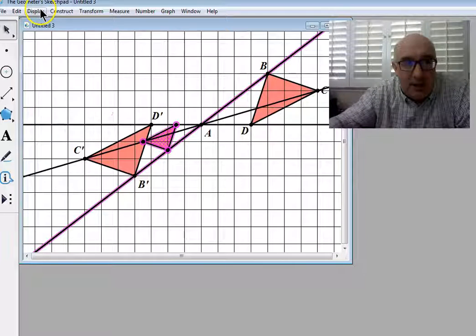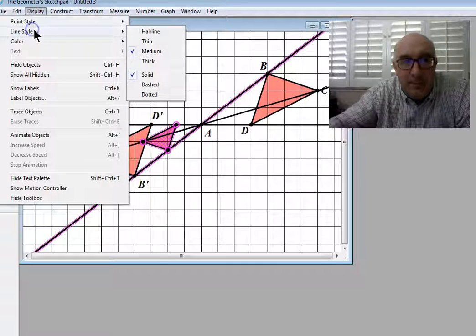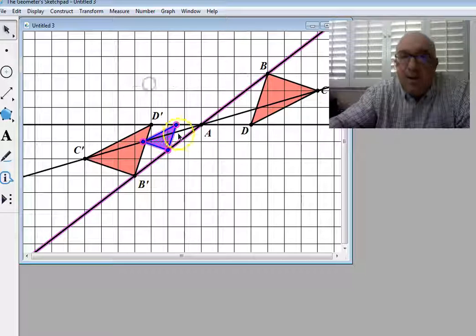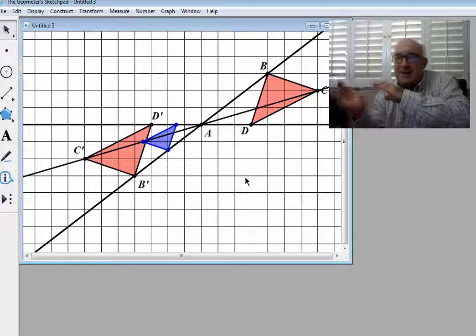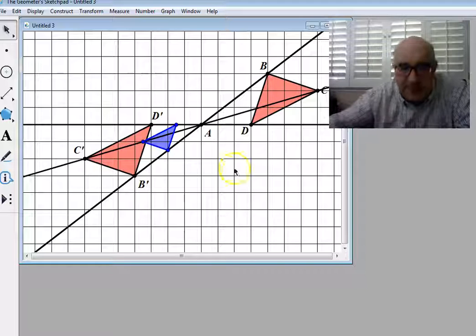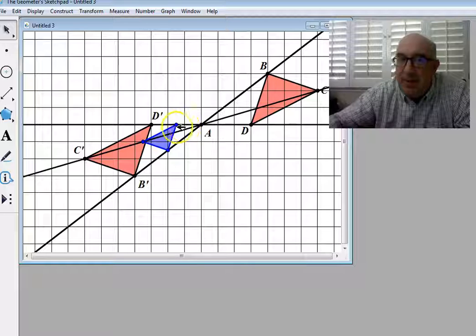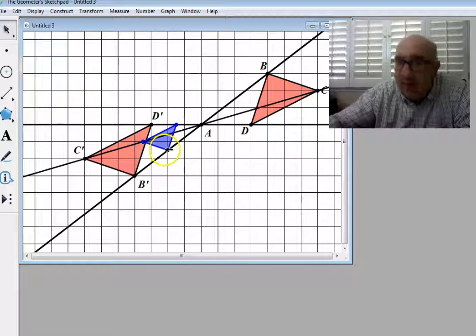Do you see? So basically, again, it creates that same guy, but it does it half the distance. So half of AD, but in the opposite direction, or half of AB, but in the opposite direction.